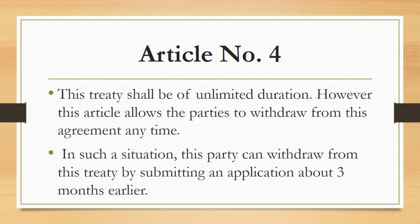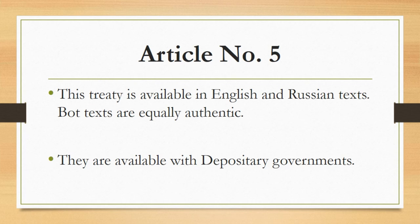In such a situation, a party can withdraw from this treaty by submitting an application about three months earlier. Article number five: this treaty is available in English and Russian text; both texts are equally authentic and are available with the depository governments.